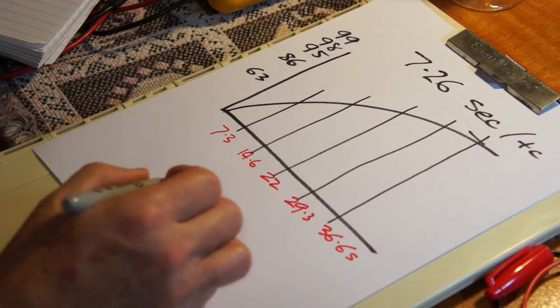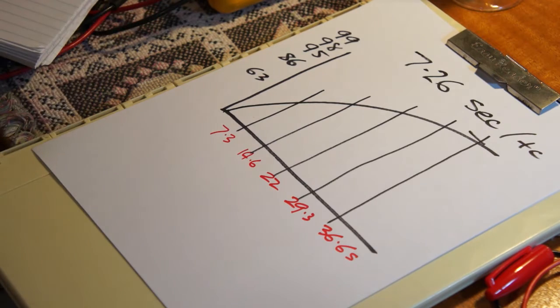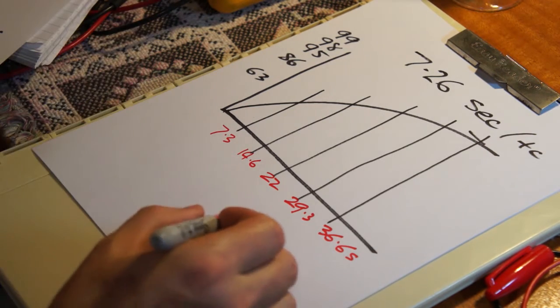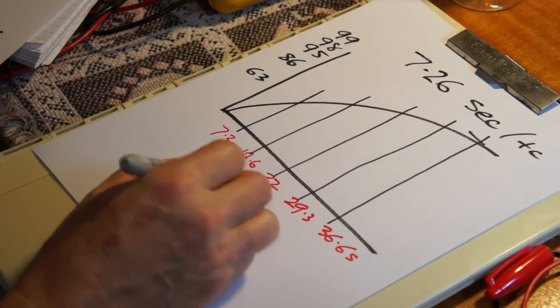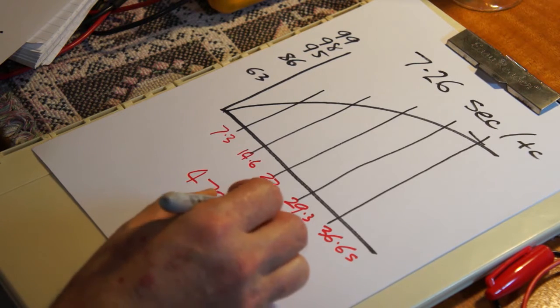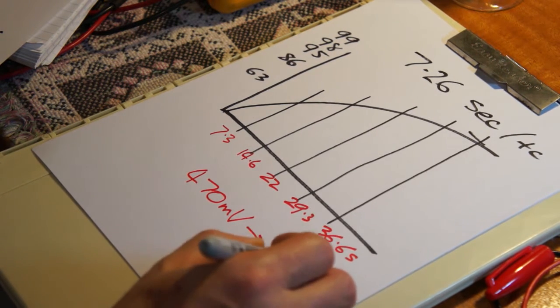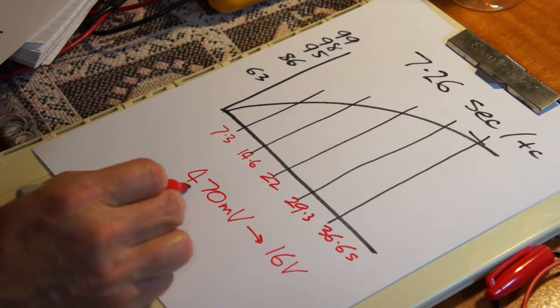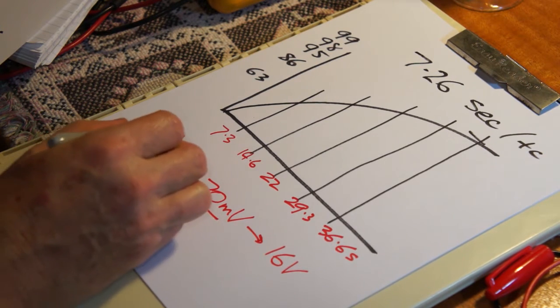And we're going to be going from, in this case, not zero volts. We're going to be going from 470 millivolts up to 16 volts. Why 470 millivolts?